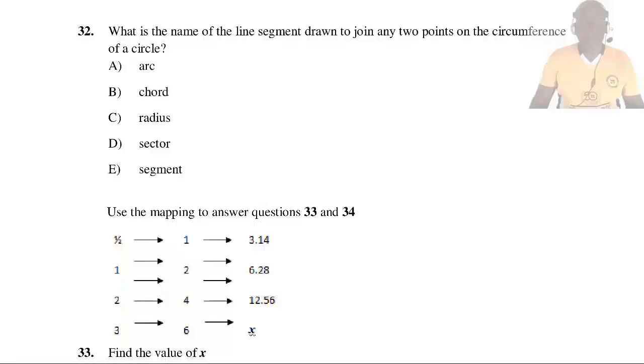Question 32: What is the name of a line segment drawn to join any two points on the circumference of a circle? The answer is B: a chord.